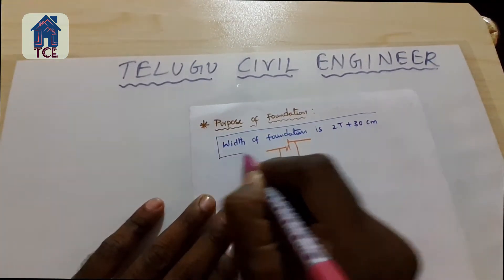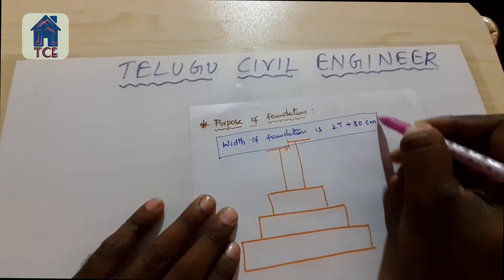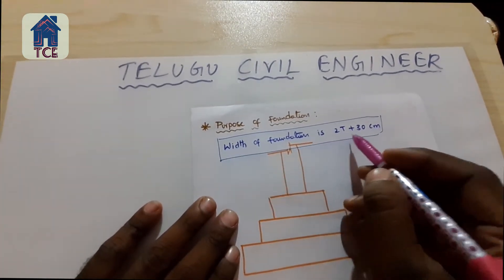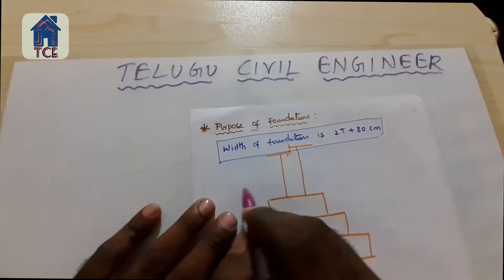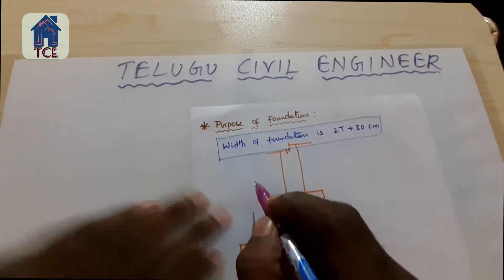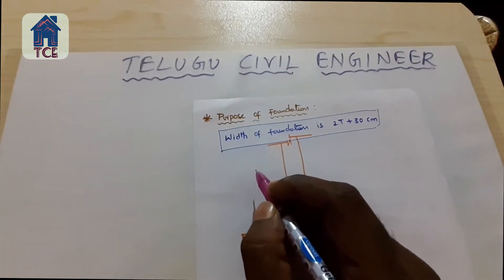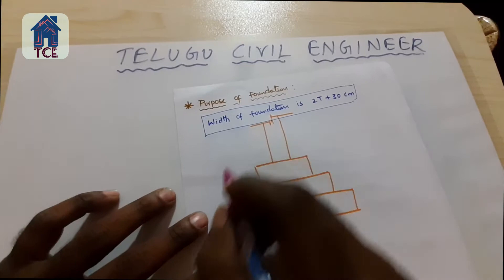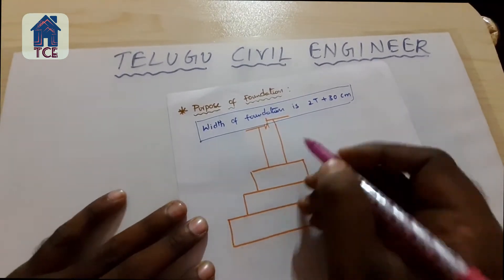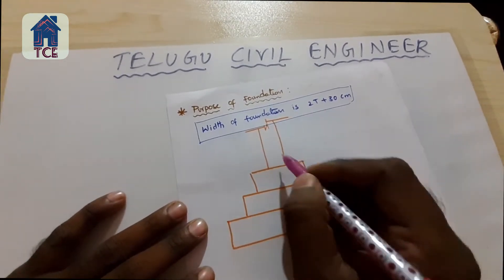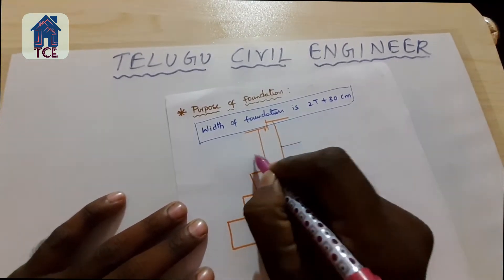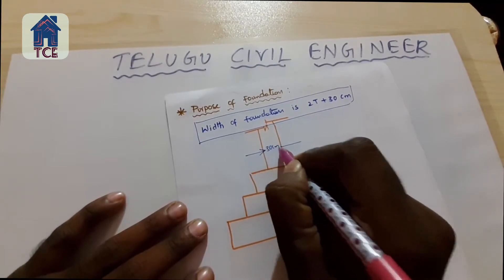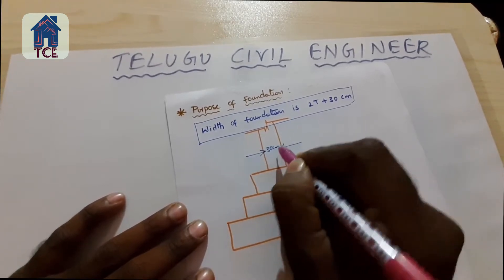This is the formula of the foundation: 2D plus 30 cm. We will calculate the width of the foundation. Here is the column.